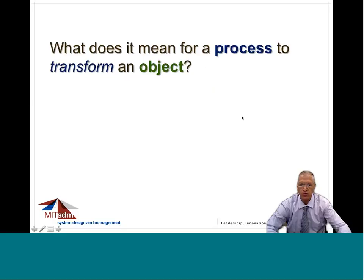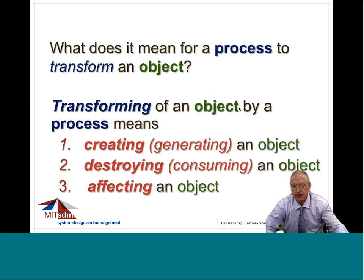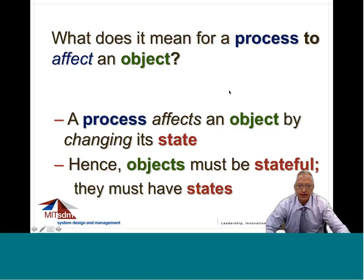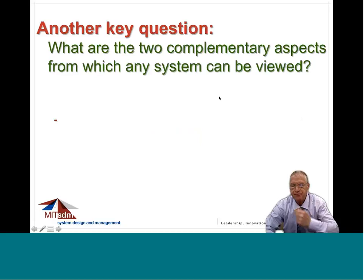What do processes do to objects? They transform. Processes transform objects. Transforming an object by a process means one of three possible things: the process can create an object, destroy or consume an object, or affect an object. Creating and destroying are quite straightforward. But what does affecting mean? A process affects an object by changing its state. So here we introduce a third term — state — in addition to objects and processes. Objects must be stateful; they must have states. We are talking about stateful objects and processes that transform them.